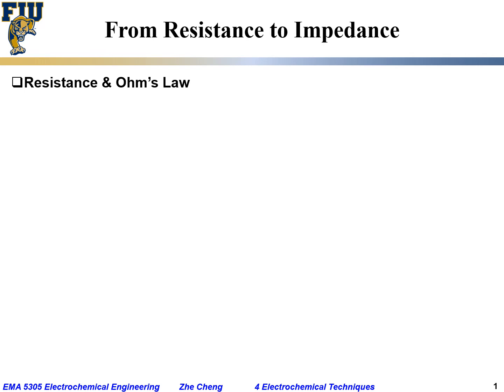From here we will talk about EIS — electrochemical impedance spectroscopy. But before we talk about electrochemical impedance spectroscopy, let's go back a little bit to talk about the necessity: from resistance to impedance.